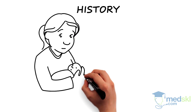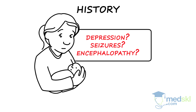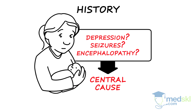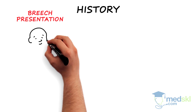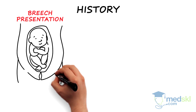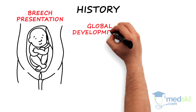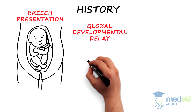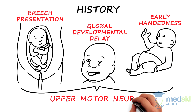A history of birth depression, seizures, or encephalopathy all indicate a central cause. Breech presentation may result in transection of the cord. This type of history, together with global developmental delay or early-handedness, all point to an upper motor neuron cause for the hypotonia.